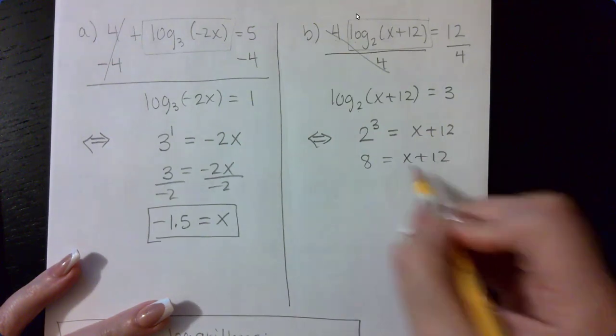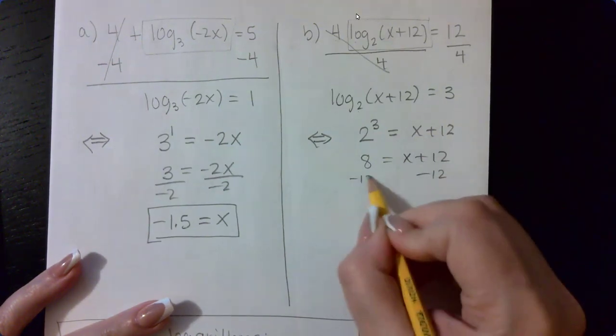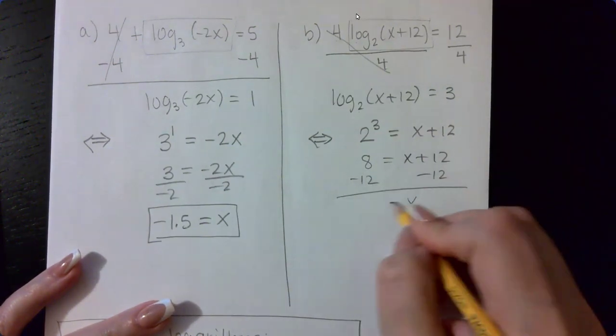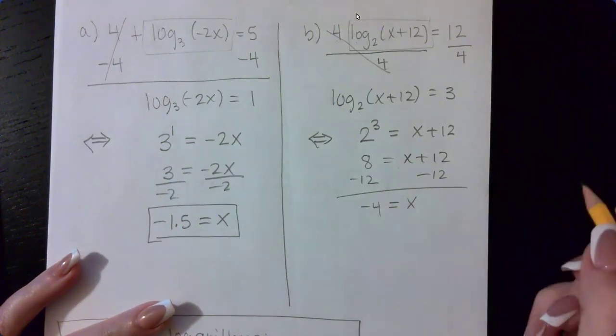In order for me to get x alone, I am going to have to subtract 12 on both sides. And I get x equals negative 4.